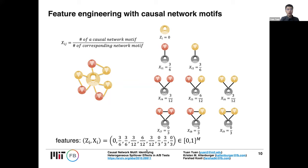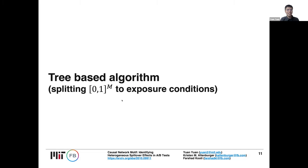Eventually we obtain this vector with support from zero to one, and our next step is to partition this space into several exposure conditions. Using a decision tree-based algorithm, we split the space such that each leaf of the decision tree corresponds to a unique exposure condition.